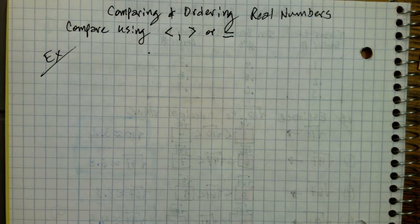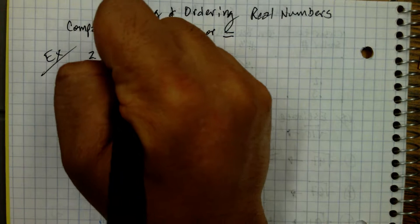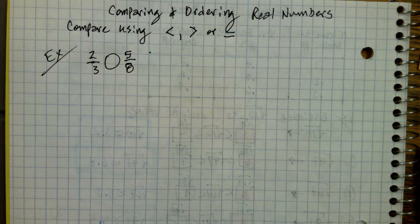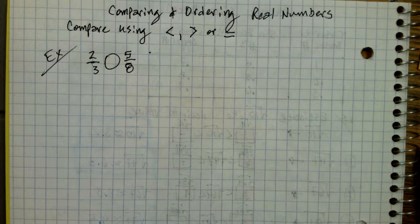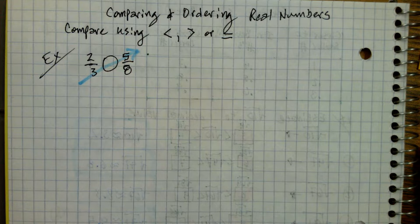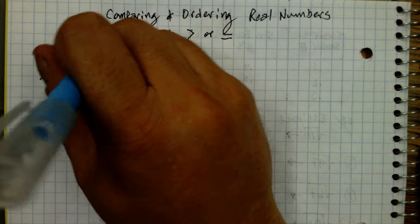There are two methods, but one is better than the other. You probably learned this. Say we have two-thirds and we want to compare it to five-eighths — which one is bigger? You probably learned to cross-multiply, right? You multiply three with five and get 15, then you multiply eight times two and get 16.